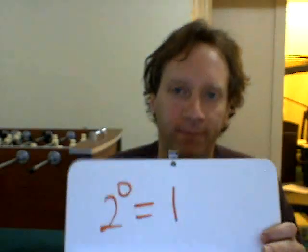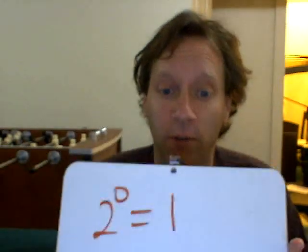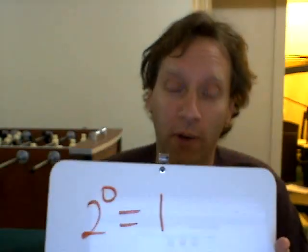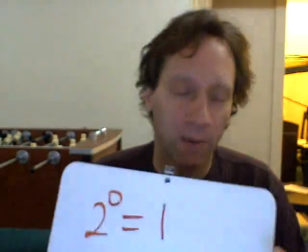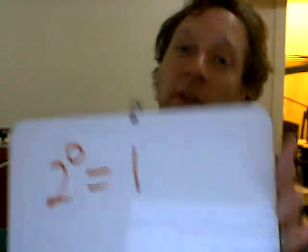It's good old 2 to the 0 equals 1. Now, as a mathematician, I'm very comfortable saying to you, that's the definition — 2 to the 0 equals 1. That's the definition of anything to the 0 power. That's just the way it is.